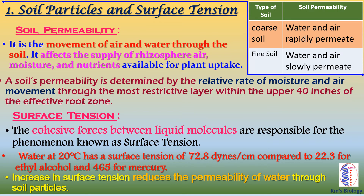Surface tension is another important parameter. The cohesive forces between liquid molecules are responsible for the phenomenon known as surface tension. Water at 20 degrees centigrade has a surface tension of 72.8 dynes per centimeter, as compared to 22.3 for ethyl alcohol and 465 for mercury. The increase in surface tension reduces the permeability of water through the soil particles.